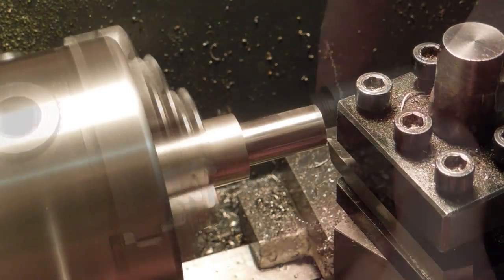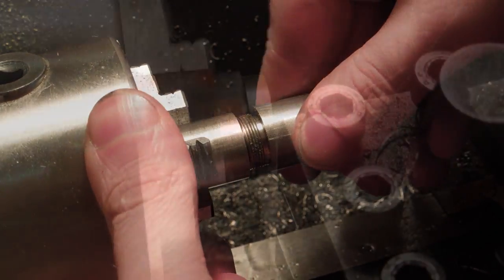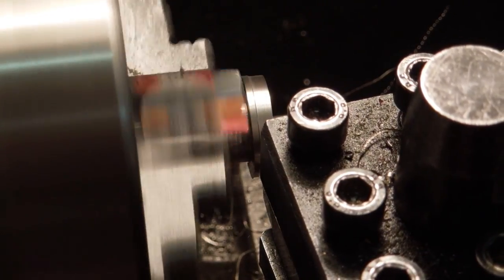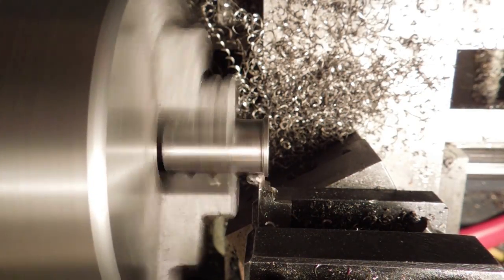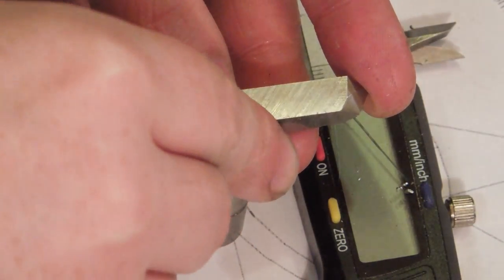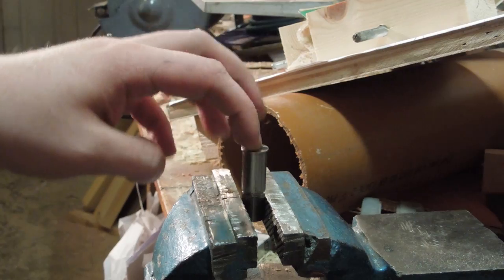The insert was then trimmed bit by bit. The rest of the bar was then hacksawed off and turned down. A small step was cut on the backside to make the part easier to remove from the lighter body. The two holes in the surface of the piece were marked out.